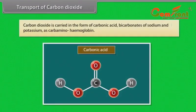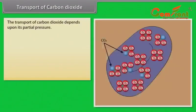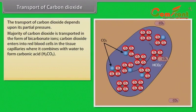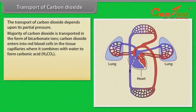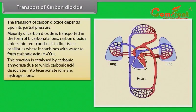Transport of carbon dioxide: Carbon dioxide is carried in the form of carbonic acid, bicarbonates of sodium and potassium, and as carbaminohemoglobin. The transport of carbon dioxide depends upon its partial pressure. The majority of carbon dioxide is transported in the form of bicarbonate ions. Carbon dioxide enters into red blood cells in the tissue capillaries, where it combines with water to form carbonic acid. This reaction is catalyzed by carbonic anhydrase, due to which carbonic acid dissociates into bicarbonate ions and hydrogen ions.